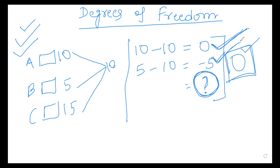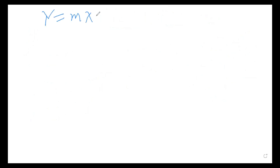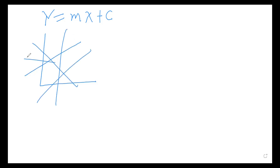Degrees of freedom means: on how many values do you not have a constraint, so that the ground rule of your framework remains intact? In this example, one value is constrained, so degrees of freedom is two. Now let me give you another example — how this works in a regression scenario with y equals mx plus c.